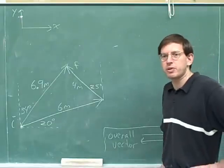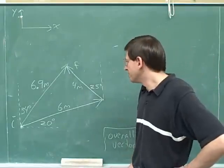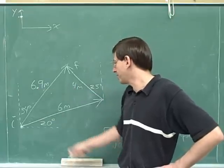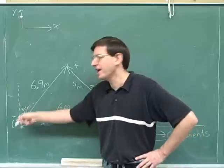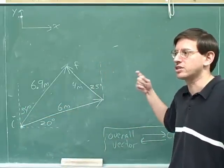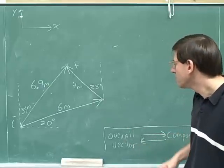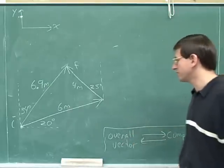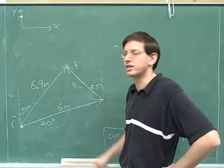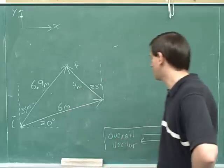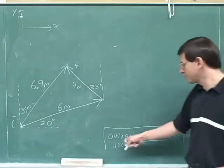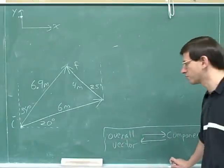The point I want to make is that this was not an easy problem. It's not obvious how you can combine 6 and 4 and get 6.9, or how we combine the 20 and 25 and get 34. Breaking an overall vector into components is a very clever trick that really simplifies combining two vectors that are not parallel to each other. And then at the end, you take the components and build back up the overall vector — we've learned how to do that as well.